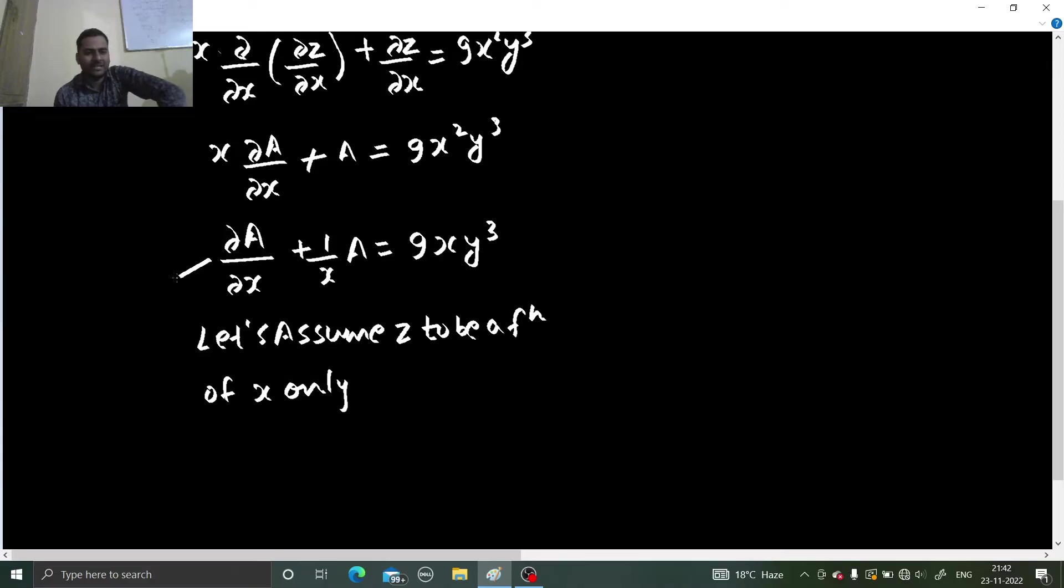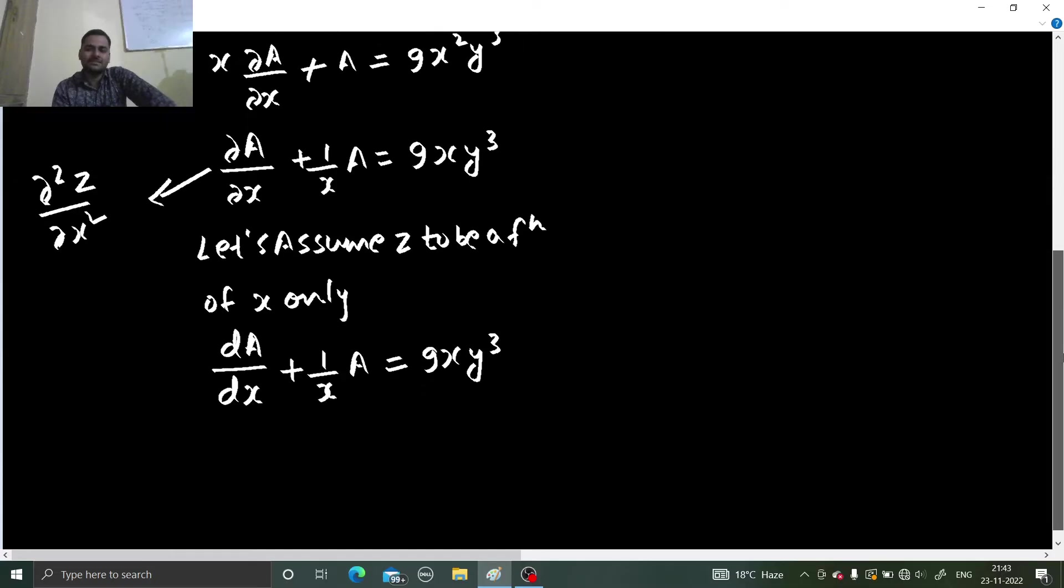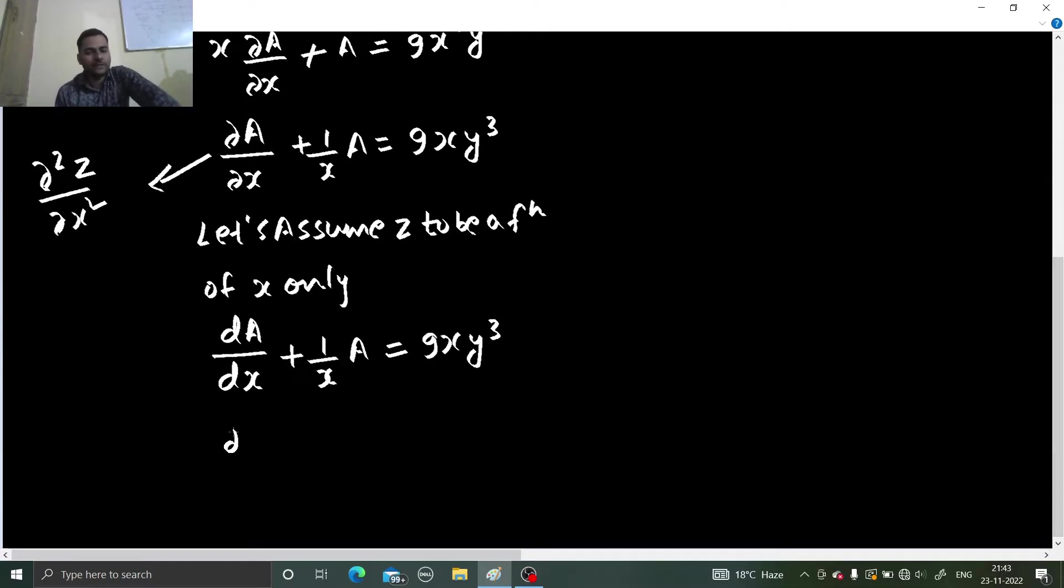I have assumed this to be A but this was del 2z by del x square only. So z is a function of x, their second partial derivative will also be a function of x. This is the form which you were looking for: dy by dx plus a function of x into y equals to another function of x.